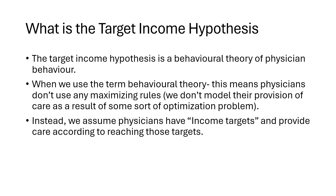The target income hypothesis is a behavioral theory of physician behavior. We use this term 'behavioral theory,' which means that physicians don't use any sort of maximizing rules in the determination of their provision of care. We're not going to model their behavior as a result of some profit maximization problem or some utility maximization problem. Instead, we're going to say that physicians have these income targets and follow rules of thumb, providing care in accordance with how they reach those targets.